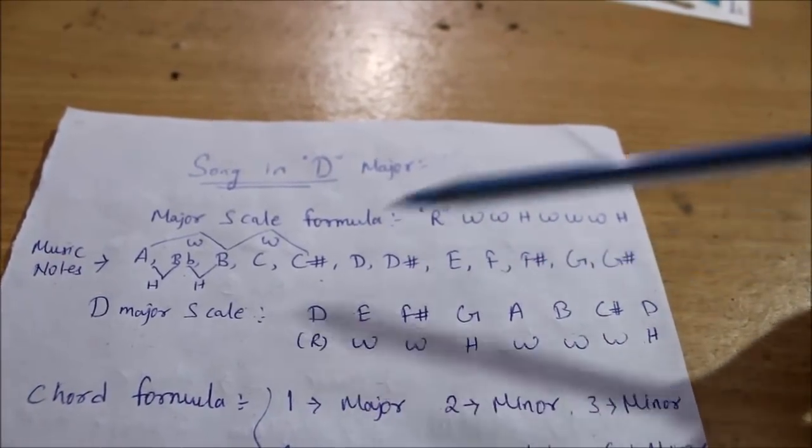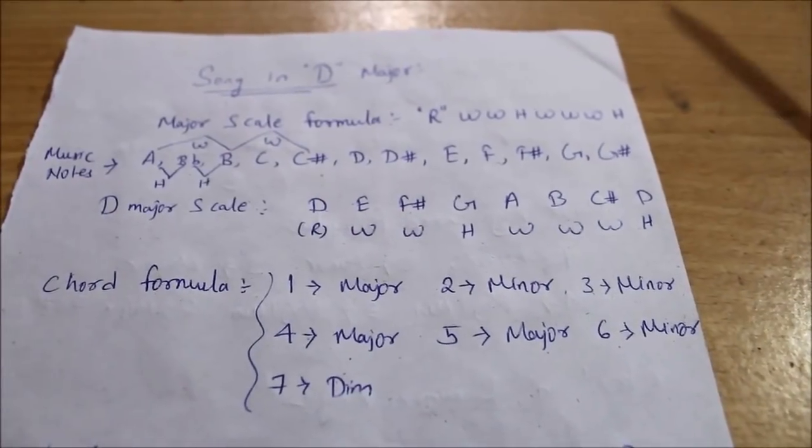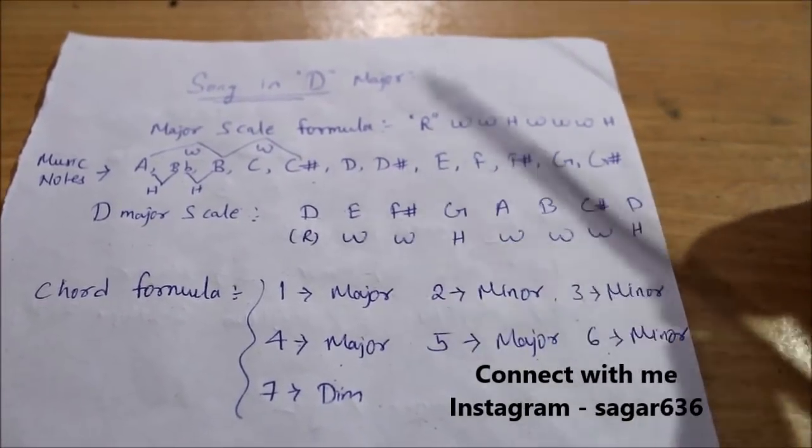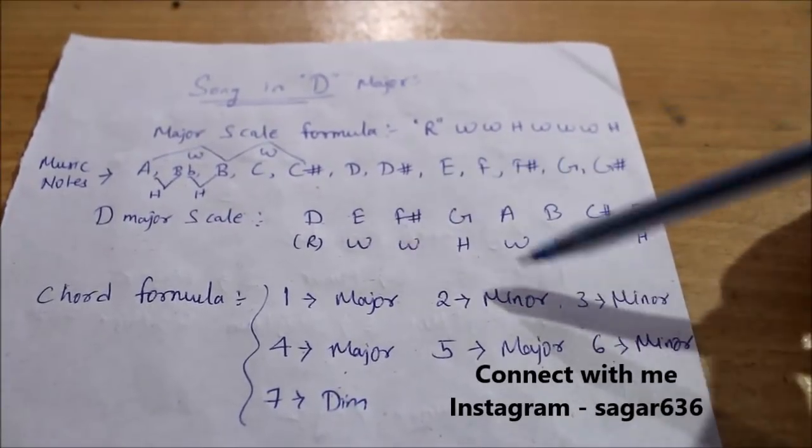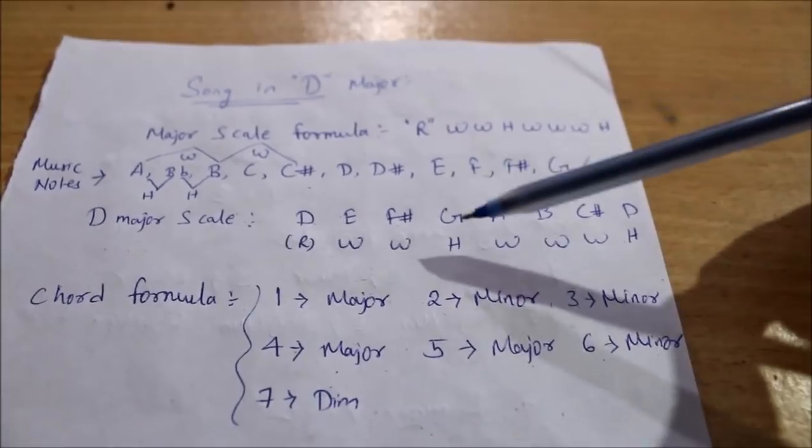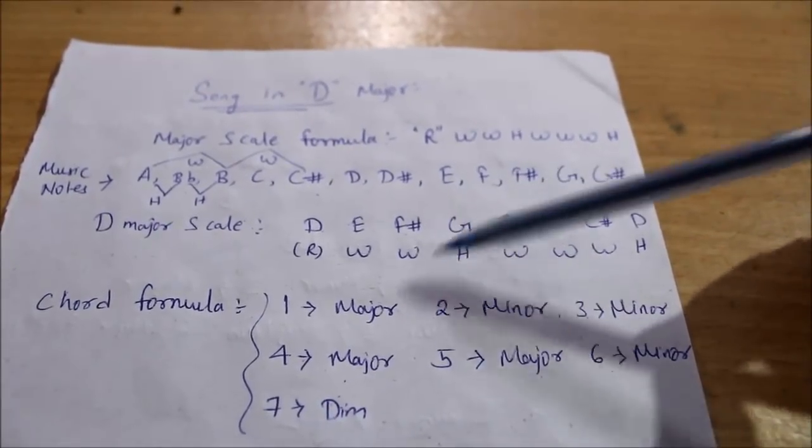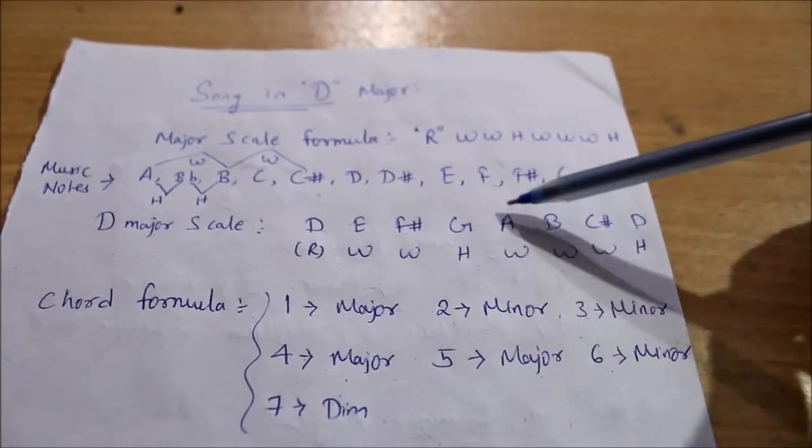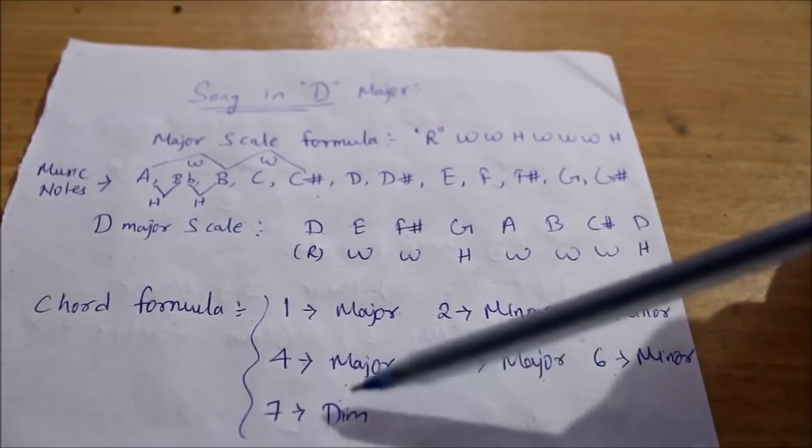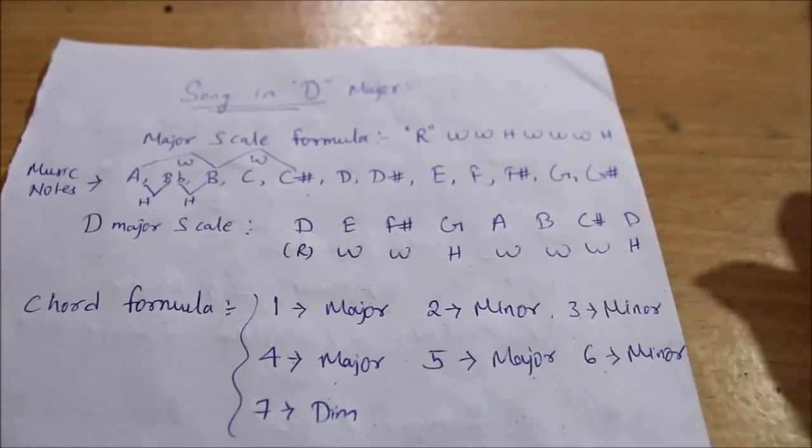Now let's see how chords derive from these notes. The chord formula is: your first note will be major chord, that is D major. Your second note E will be minor. The F#, third, will be minor. Your fourth note G will be major. Fifth note, major. Sixth note, minor. And seventh note, diminished, which we don't use, so we will skip it. We will do basic, normal major and minor.